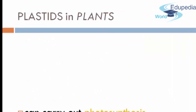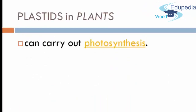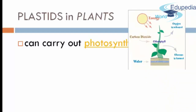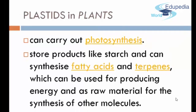Plastids in plants is very important because this can carry out photosynthesis, and photosynthesis is a process needed by plants, which means they give food by using energy, carbon dioxide, and water. It also stores products like starch, and can synthesize fatty acids and terpenes, which can be used for producing energy and as a raw material for the synthesis of other molecules.